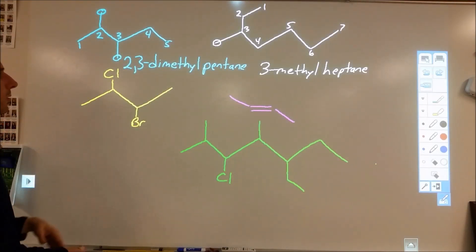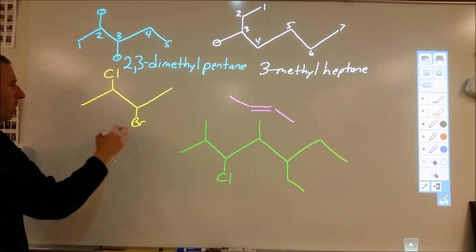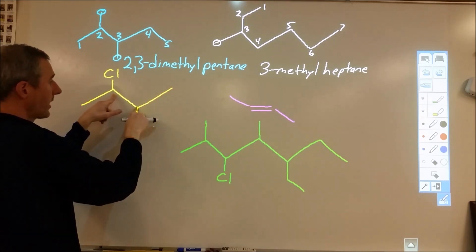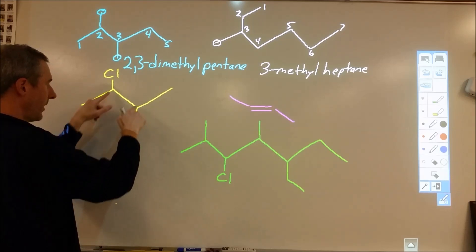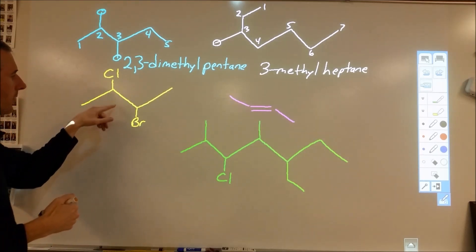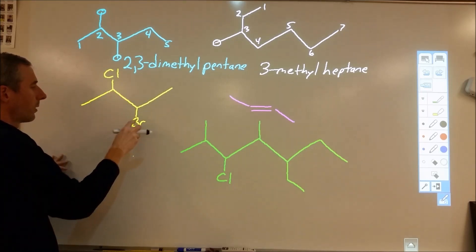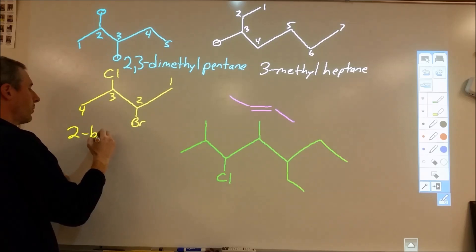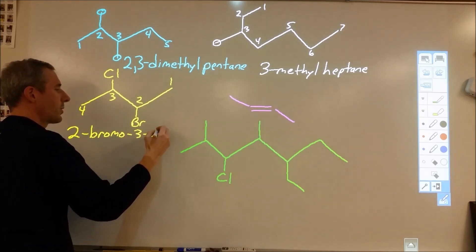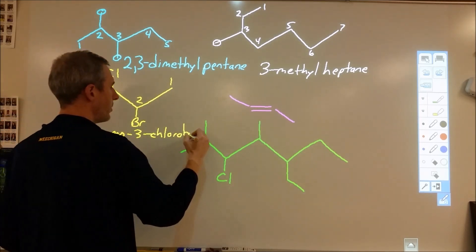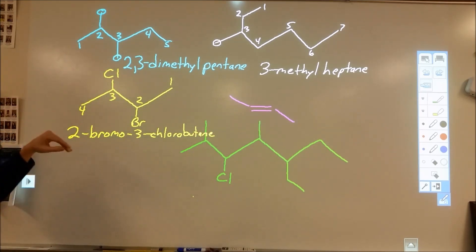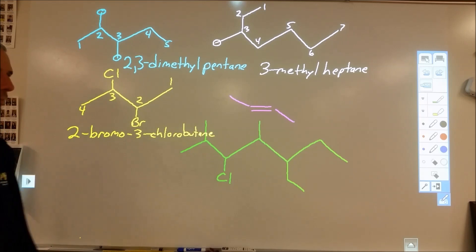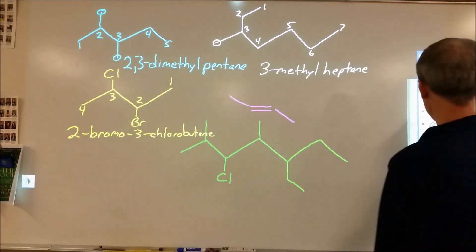What if the substituents aren't just alkyl groups — what if we have a chlorine and a bromine? We treat them as branches the same way. Counting from either end I reach the first branch at the second carbon, so there's a tie. To tiebreak, I continue to the next branch — one end gives bromo at two and chloro at three, the other gives bromo at three and chloro at two. Since bromo comes before chloro alphabetically, I number to get bromo first: this is 2-bromo-3-chlorobutane. Remember: two numbers are separated by a comma; a number and a letter are separated by a dash.